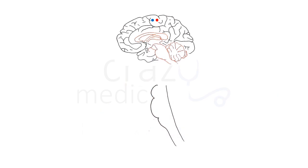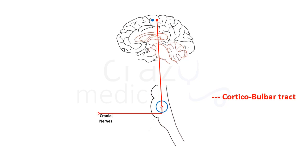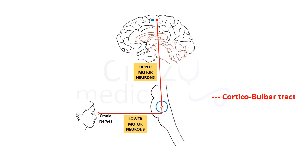Similarly, the corticobulbar tract relays at its nucleus in the brainstem, and the fibers emerge out as cranial nerves which supply their respective areas. All fibers of the corticobulbar tract above the brainstem nucleus are considered upper motor neurons, and the nucleus and the cranial nerves that emerge out are lower motor neurons.